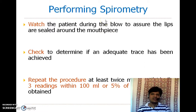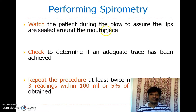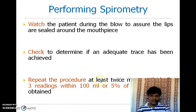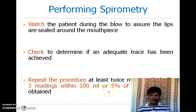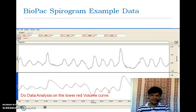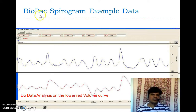What is the doctor's role during spirometry? The doctor has to watch the patient during the blow to ensure that the lips are sealed around the mouthpiece and to determine if an adequate trace has been achieved. The procedure must be repeated at least twice more until ideally three readings within 100 ml or 5% of each other are obtained. This spirogram is then compared with a standard using software called Biopack.